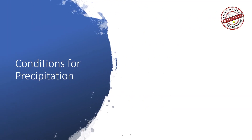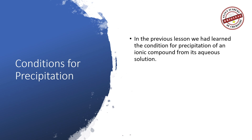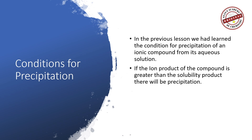Before we proceed, it would be a good idea to review the condition required for precipitation of an ionic compound from its aqueous solution. In the previous lesson, we learned that precipitation of an ionic compound from its solution will only take place if the ion product of the compound is greater than the solubility product — that is, QSP is greater than KSP.